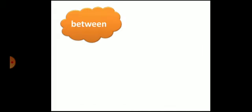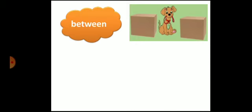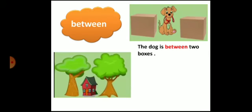The next preposition is 'between'. Between is used to show something is in the center of two things or persons. Can you see a dog? Where is the dog? The dog is sitting between two boxes — 'between' shows that something is in the center of two things. Now, where is the house? The house is between the trees. So the word 'between' is a preposition.